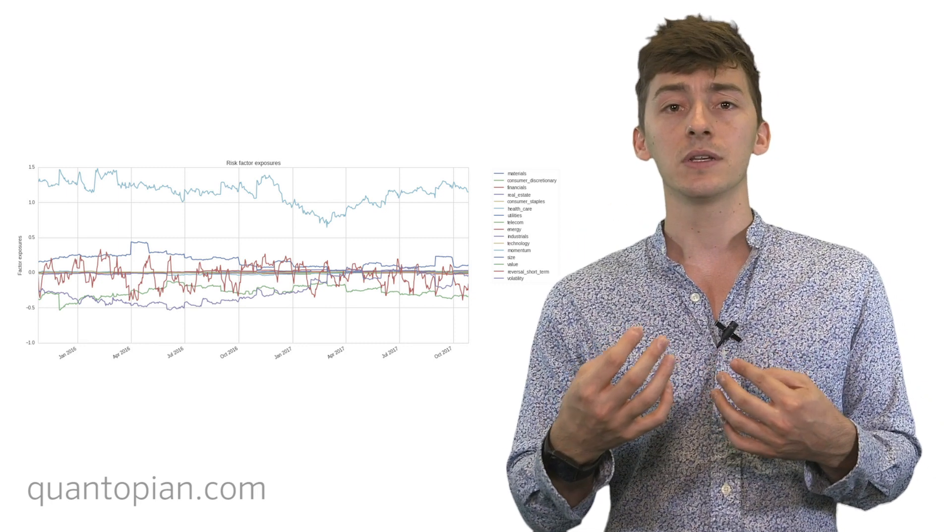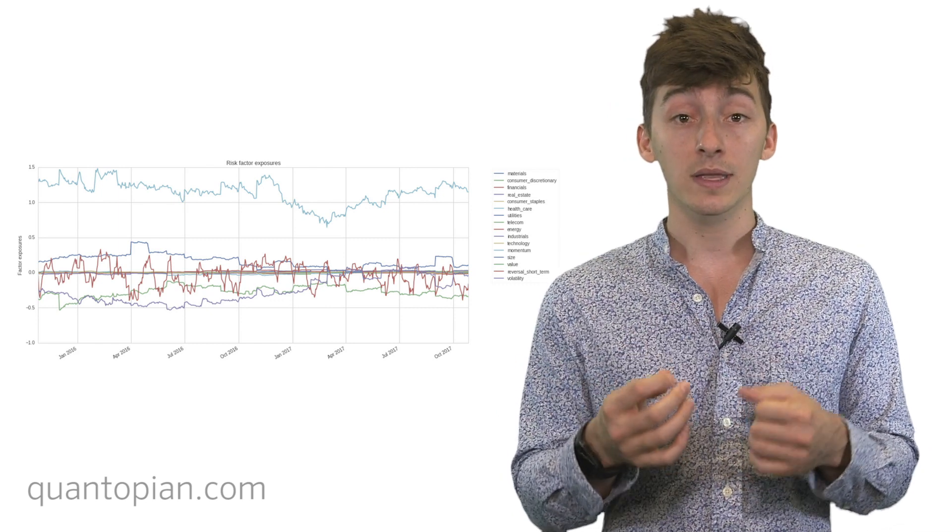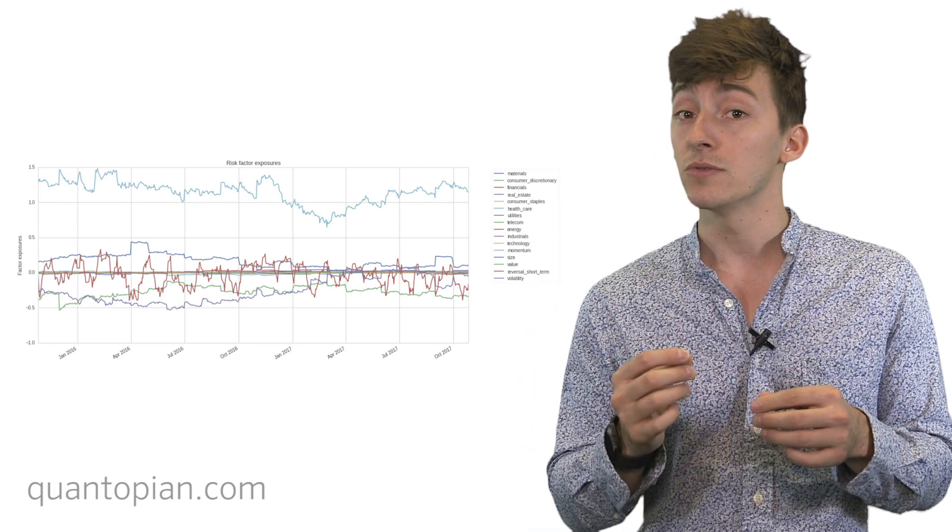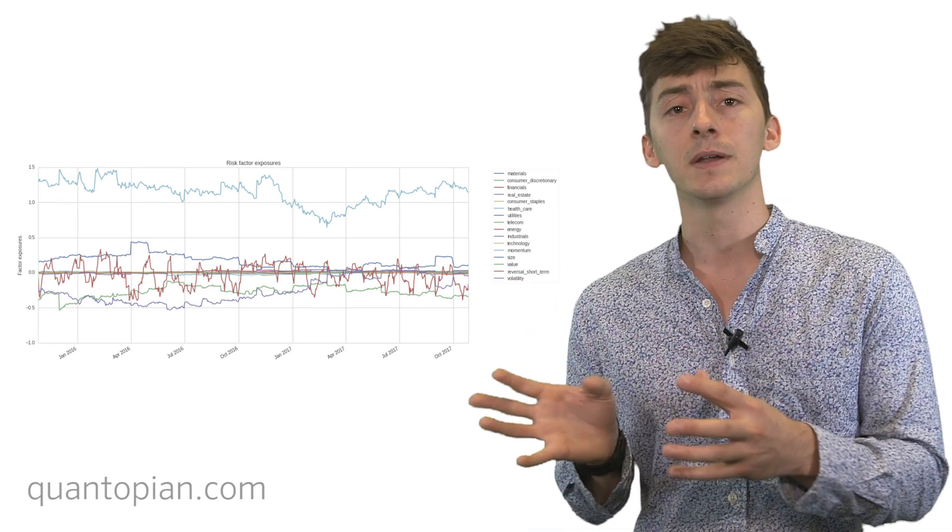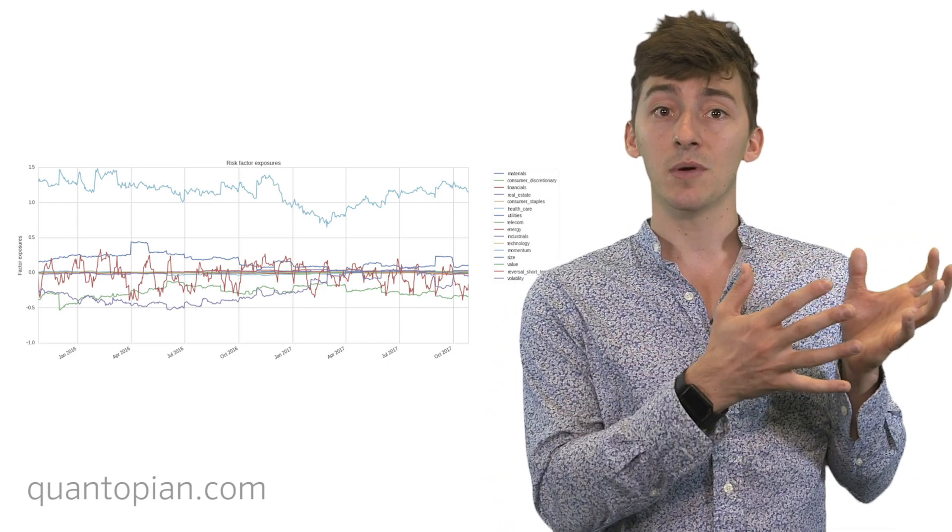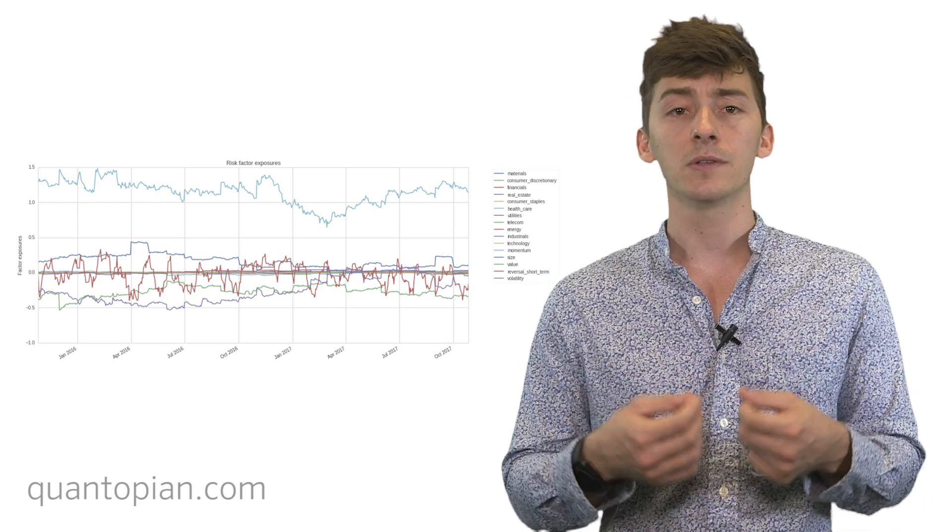If we think that a strategy is a momentum strategy, then we want to make sure that it actually has exposure to momentum and not exposure to mean reversion or any other combination of risk factors. If we think that it's okay and it has enough exposure to momentum despite these other exposures, that's fine. But this gives us more information about what our strategy is actually composed of.